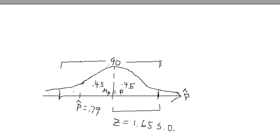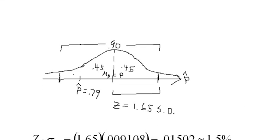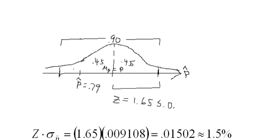And so we're 90% confident that our sample will be within 1.65 standard deviations of the actual proportion, population proportion. Now, how far is that in percentages?